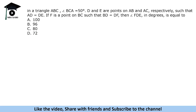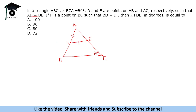In triangle ABC, angle BCA is equal to 50 degrees. D and E are points on AB and AC such that AD equals DE. F is a point on BC such that BD equals DF. We have to find angle FDE.